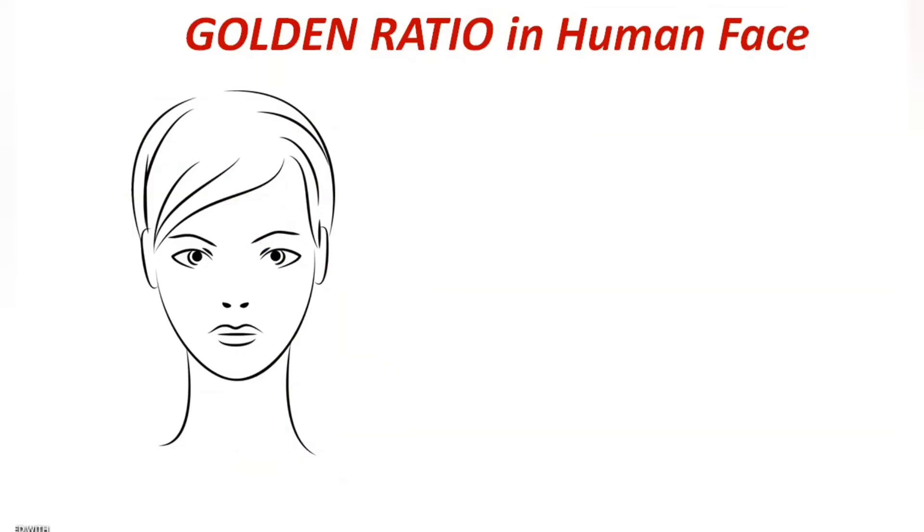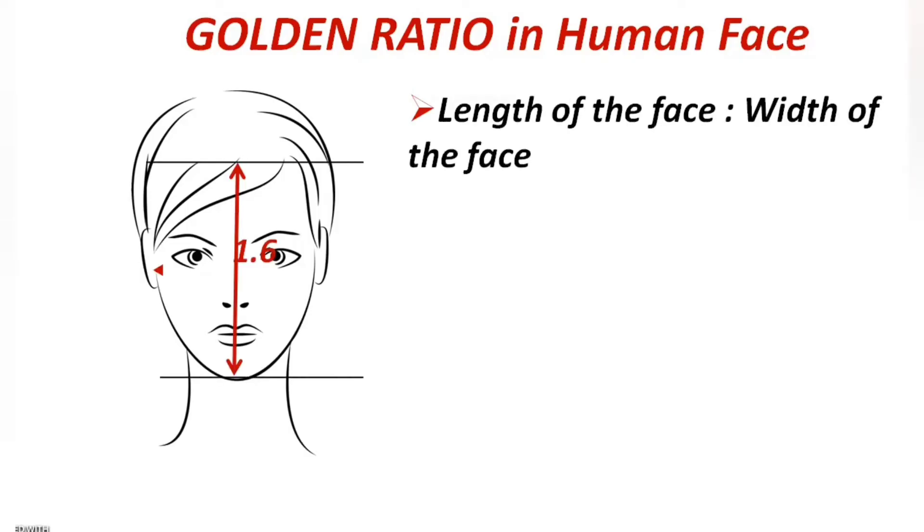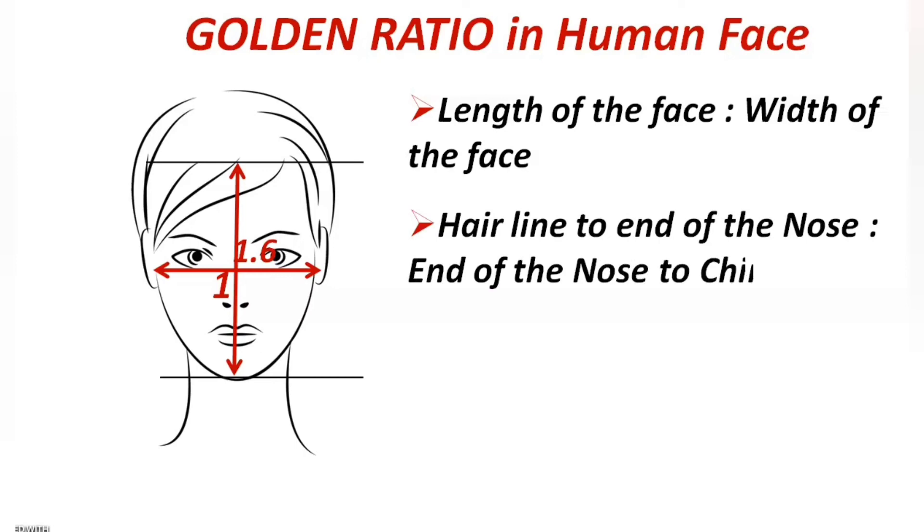So the length of the face is to width of the face will be 1.6 is to 1 unit. Similarly, hairline to the end of the nose is to end of the nose to chin. This is also in a golden ratio.